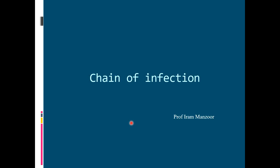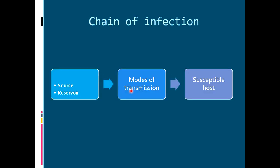The chain of infection describes how infection gets maintained through the source or reservoir. The infectious agent stays in the source or reservoir and from there it gets transmitted to the susceptible host by different modes of transmission. This is the simple model which shows the chain of infection from the source or reservoir to the susceptible host through different modes of transmission.